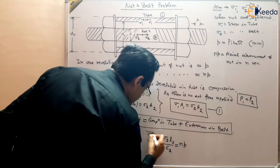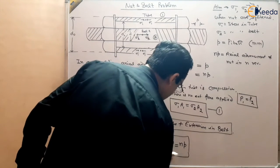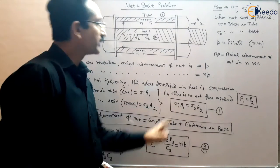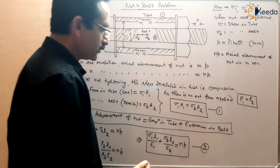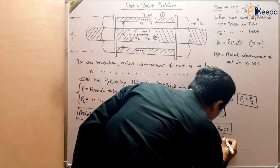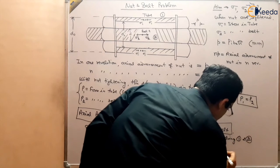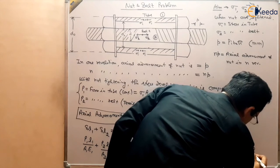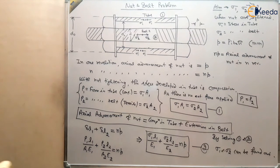Using the axial deformation formula — deformation equals PL upon AE, and P/A equals stress — we can write: sigma 1 L1 upon E1, plus sigma 2 L2 upon E2, equals nP. This is our second equation. By solving equations 1 and 2, we can find out sigma 1 and sigma 2 — the stresses in the tube and bolt.